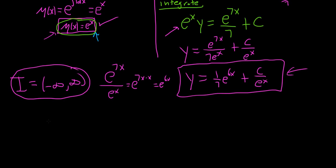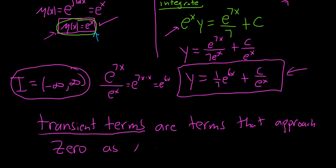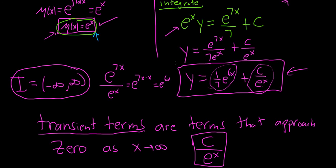The transient terms are terms that approach 0 as x approaches infinity. If you take the limit of each term as x approaches infinity: (1/7)e to the 6x goes to infinity — not transient — but C·e to the negative x is a number over something huge, so it goes to 0. Therefore the transient term in this problem is C·e to the negative x.